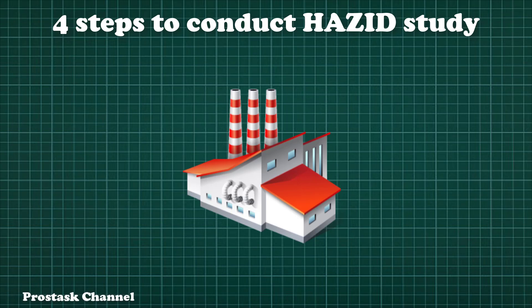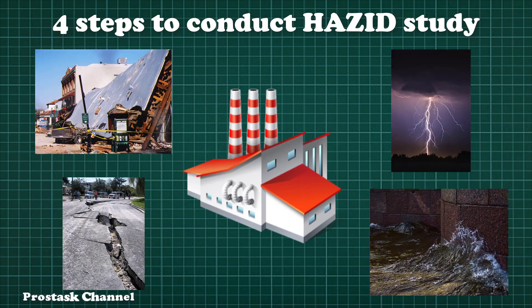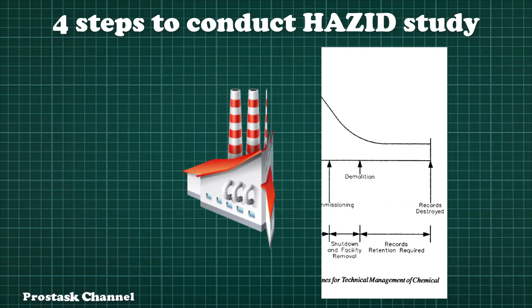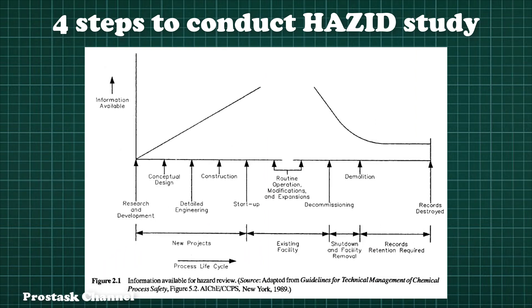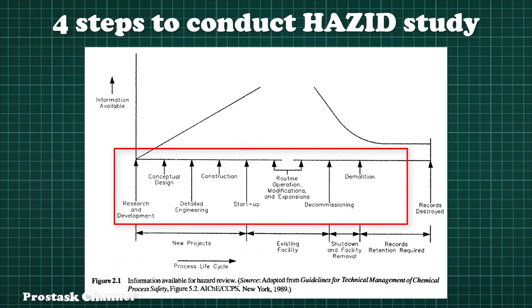Four steps to conduct Hazard Identification, or HAZID. Hazard Identification Study is a technique for the identification of all significant hazards associated within a facility. HAZID is one of the safety review techniques which can be used at any stage of the life of a process.